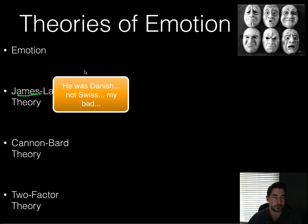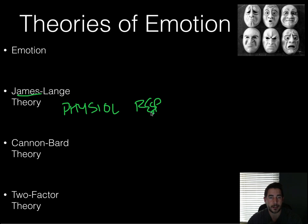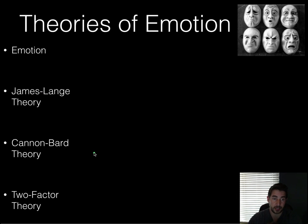So the James-Lange theory says that first you have a physiological response, and then you experience the emotion. This kind of goes counterintuitive to what we would think. He says that first your heart starts beating fast, and then you think, 'Oh, my heart's beating fast — I must be scared.' That's James-Lange. I'm going to put this in a little graph at the end so you can better understand it.